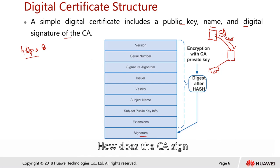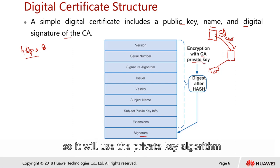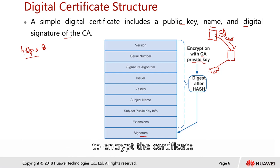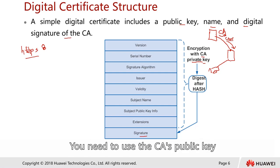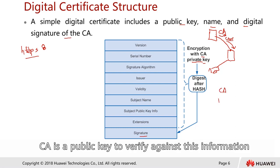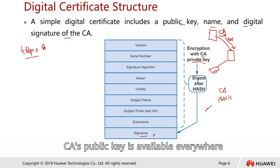How does the CA sign? The CA will actually encrypt with its private key — it uses the private key algorithm to encrypt the certificate. That signature can only then be verified using the CA's public key, verified against the information from the signature.